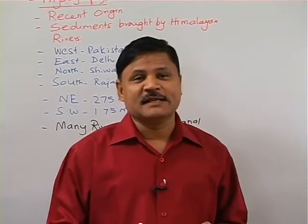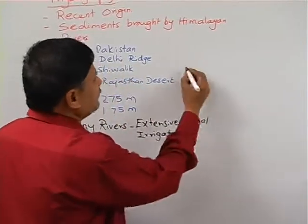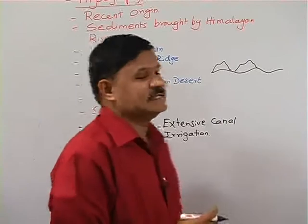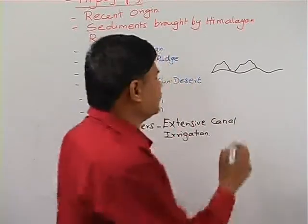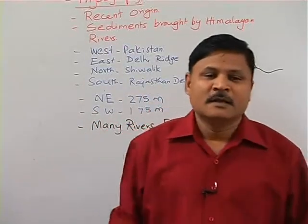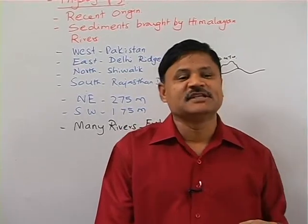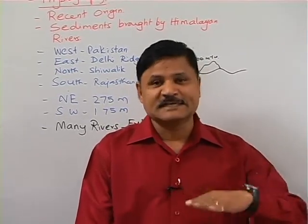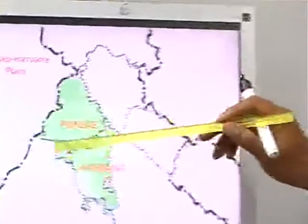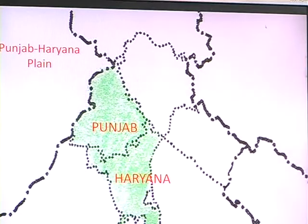Here we can see many undulating hills — the land is not flat but undulating. There are small hills with a height of more or less 300 meters. The southwestern part, towards the Rajasthan side, is semi-arid and slowly merging with the Rajasthan desert.